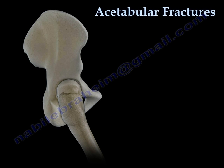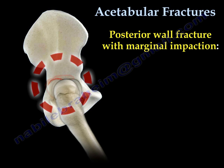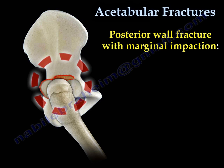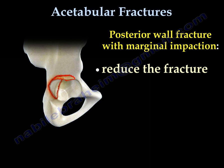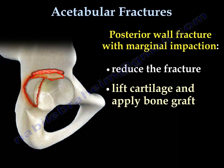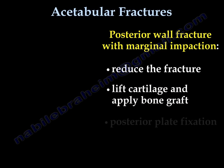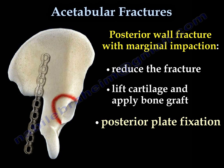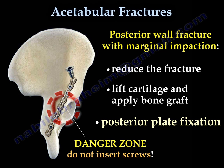Posterior wall fracture can have marginal impaction, where pieces of cartilage are impacted inside the joint. Reduce the fracture, lift the cartilage up, apply bone graft behind it, and add posterior plate fixation.